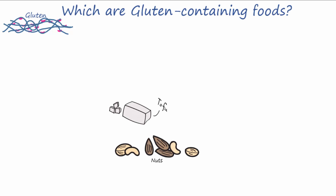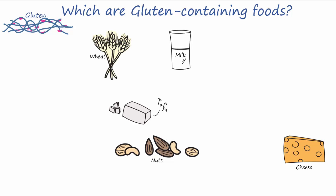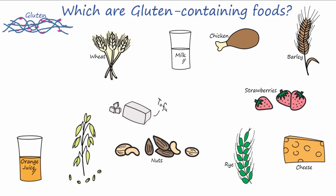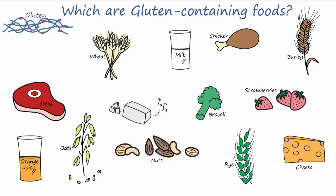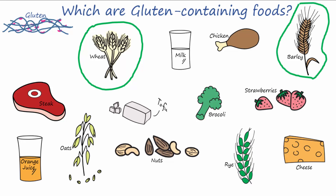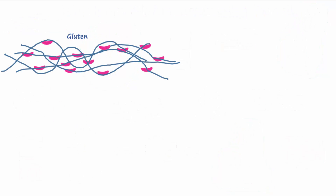The disease process begins with gluten. Of the following foods, can you determine which contain gluten? Please pause the video briefly and think of your answer. Here's a hint: three of them contain gluten. If you selected wheat, barley, and rye, then you are correct.